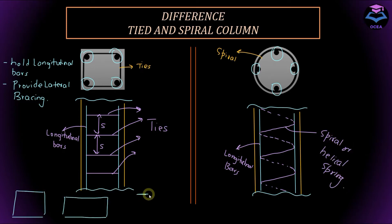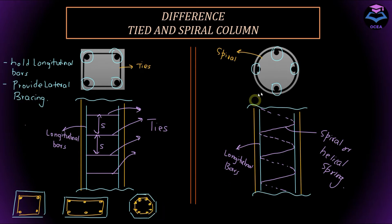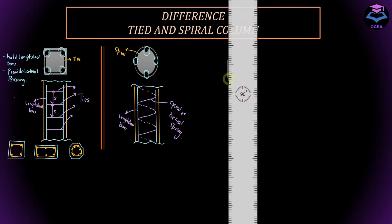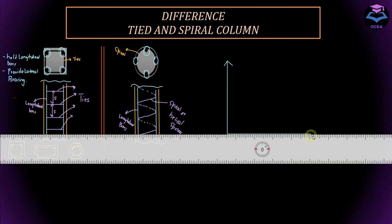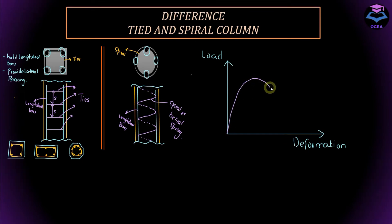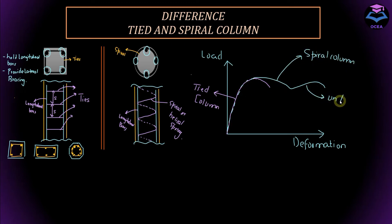Tied columns can be square, rectangular, circular, octagonal, or L-shaped. Spiral columns are usually round — they can be rectangular in shape but the helical spiral inside is kept in a circular arrangement. If we compare the typical load-deformation curves of a tied column and a spiral column, a tied column fails suddenly whereas a spiral column undergoes a large amount of permanent deformation before failure occurs. A sudden failure is not expected in spiral columns, which means spiral columns are ductile in nature.